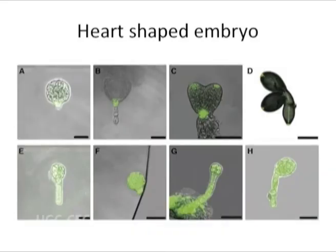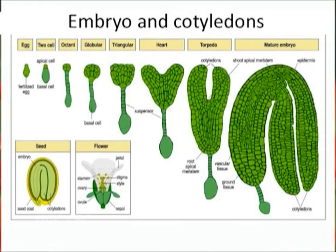The lowermost cell of the suspensor, the hypophysis, forms the embryonal root and root cap by further divisions. In the cotyledon stage, the embryo takes the shape of a heart with two primordia of cotyledons. A mature embryo is made up of a small axis and two cotyledons.